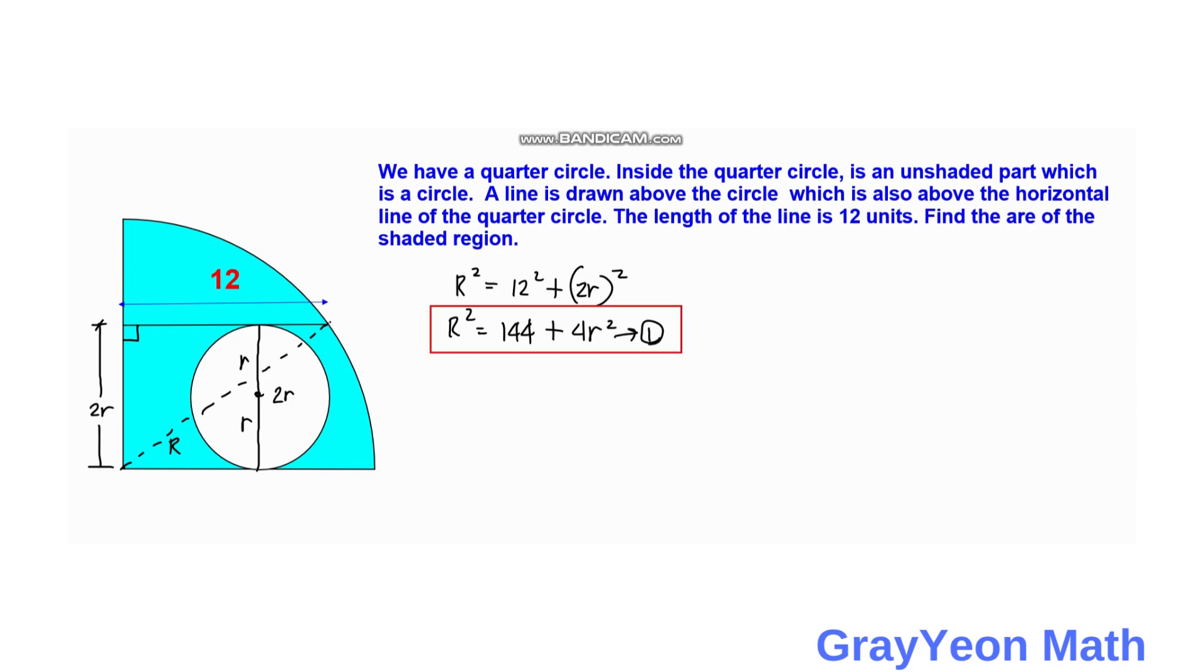So we have R square is equal to 144 plus 4R square and let this be equation 1. Okay, so next thing that we need to do is we need to make an equation about the area of the shaded region and that would be area pi times the radius of the quarter circle and that would be 5 times R square but you need to divide it by 4 because it is a quarter circle minus pi R square.